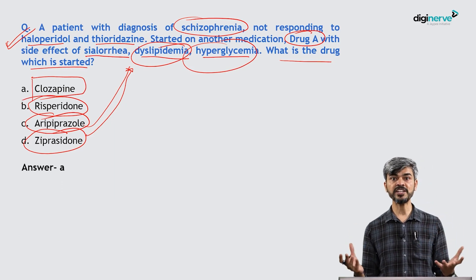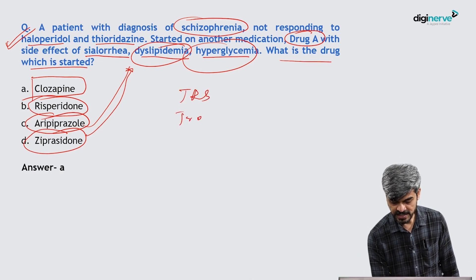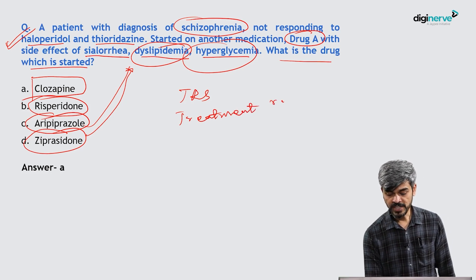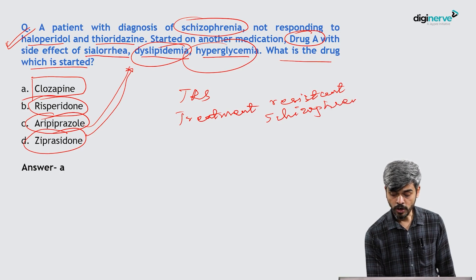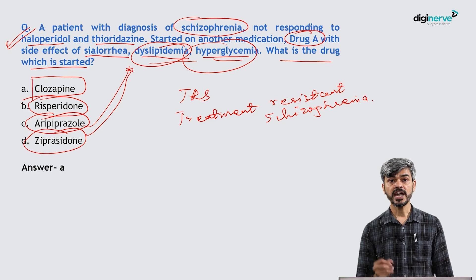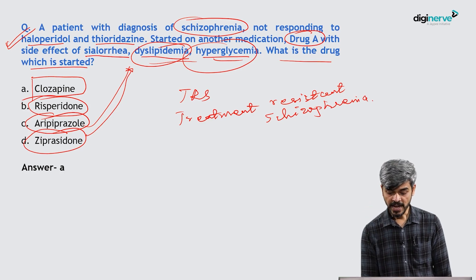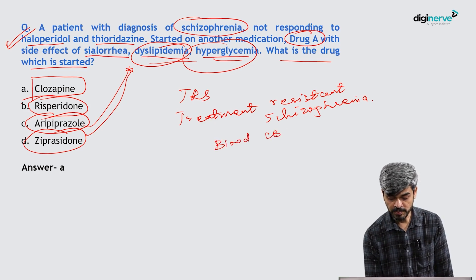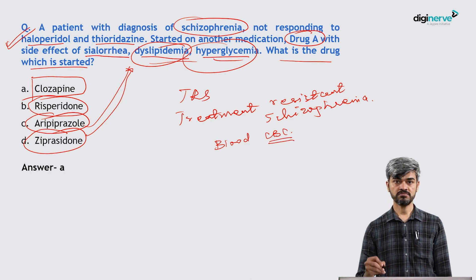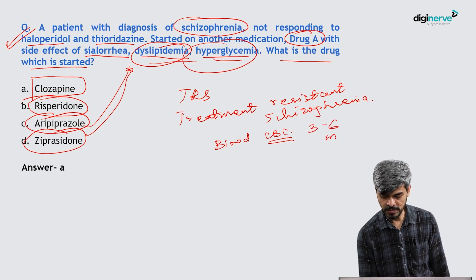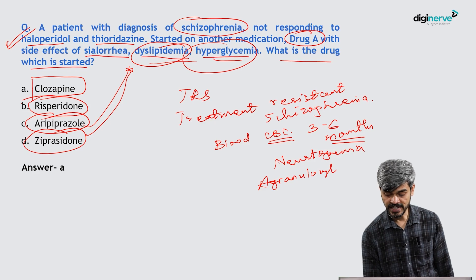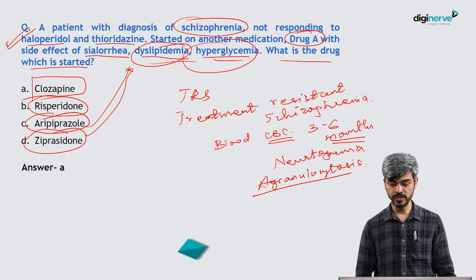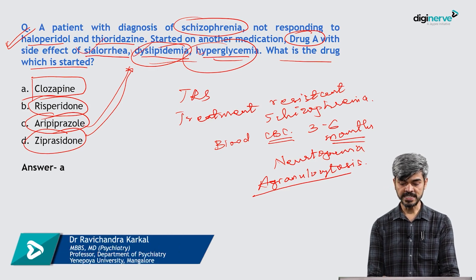Clozapine is a very good drug for treatment-resistant schizophrenia but causes significant metabolic issues such as dyslipidemia, hyperglycemia, and increased salivation. You also need to monitor blood count — complete blood count (CBC) every week for the first 3 to 6 months — to ensure the patient does not develop agranulocytosis or neutropenia. Agranulocytosis is a severe adverse effect of clozapine that requires careful monitoring. The answer is clozapine.